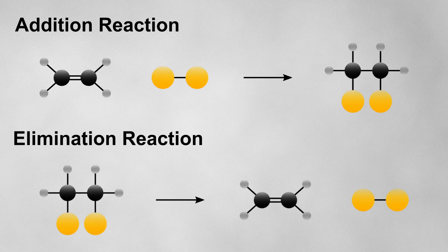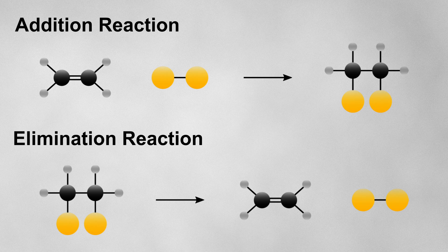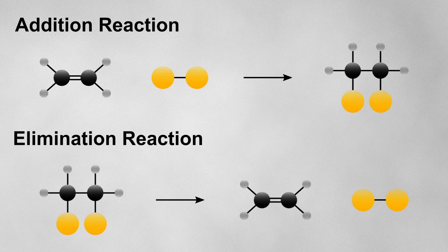In an elimination reaction, atoms are removed from a molecule to form multiple products, one of which being the molecule with the multiple bond, and hence alkenes are commonly formed from elimination reactions.